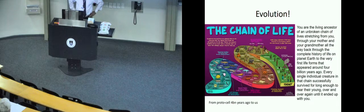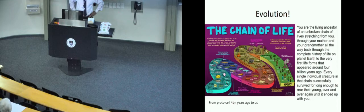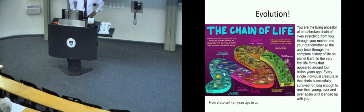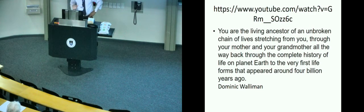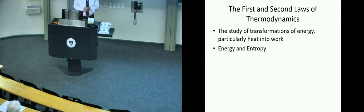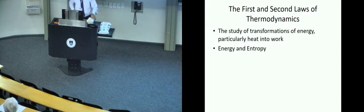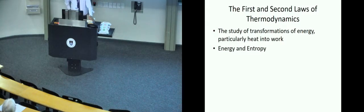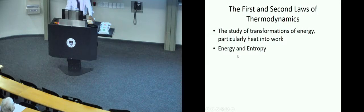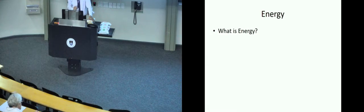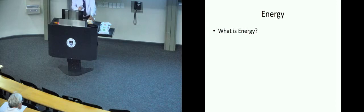From there up to today, you are the living ancestor of an unbroken chain of life stretching from you through your mother and grandmother all the way back through the complete history of life on planet Earth to the very first life forms that appeared around four billion years ago. Every single individual creature in that chain successfully survived for long enough to rear young over and over again until it ended with you. Richard Dawkins in The Ancestor's Tale highlights how we have shared a common ancestry with every other living organism on this planet.